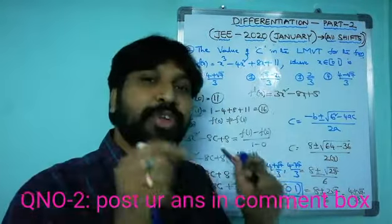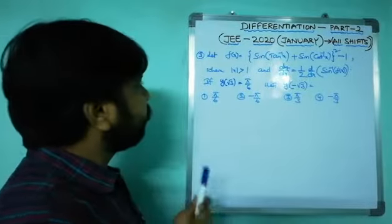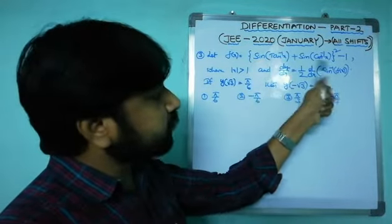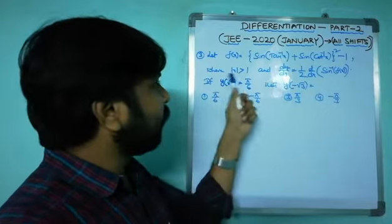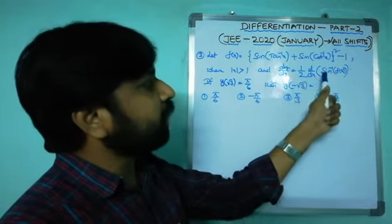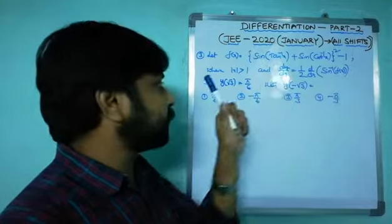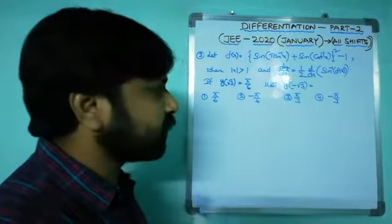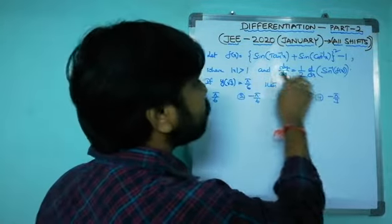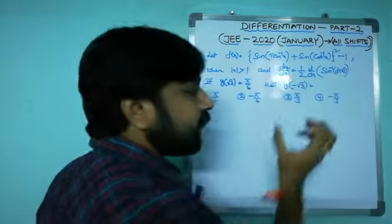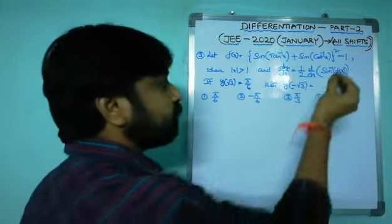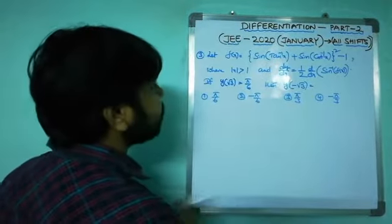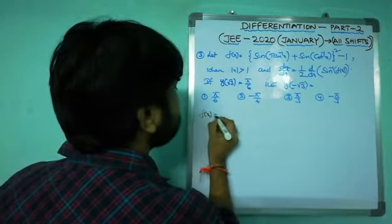Third question: let f(x) = [sin(tan⁻¹x) + sin(cot⁻¹x)]² - 1 where |x| > 1, and dy/dx = (1/2)·d/dx[sin⁻¹(f(x))]. If y(√3) = π/6, find y(-√3). First, simplify f(x), since we need to substitute it into sin⁻¹(f(x)).